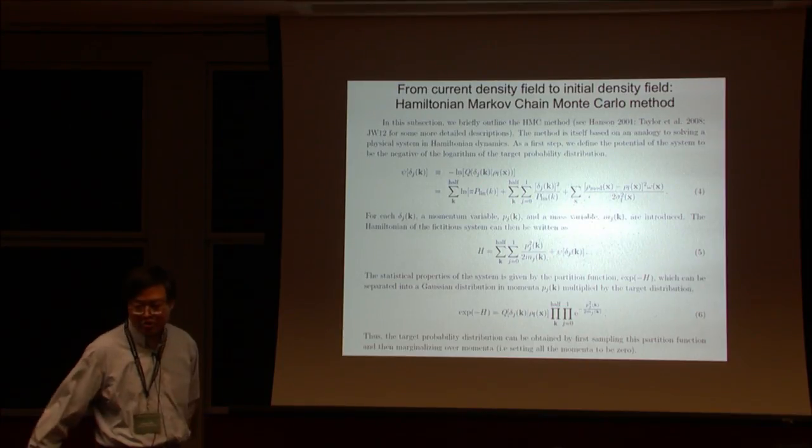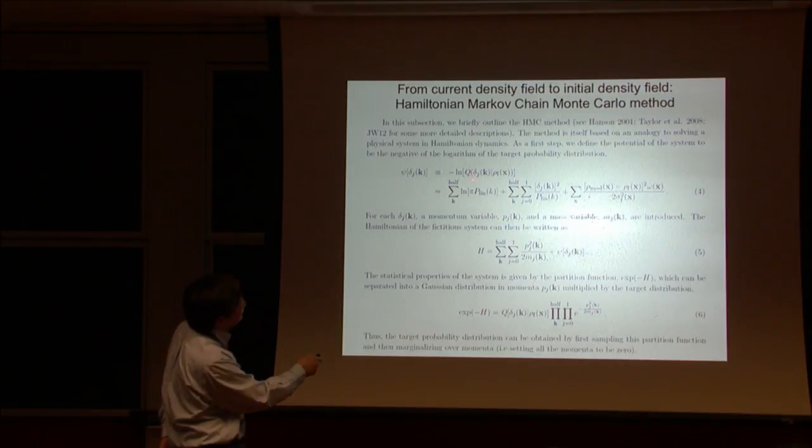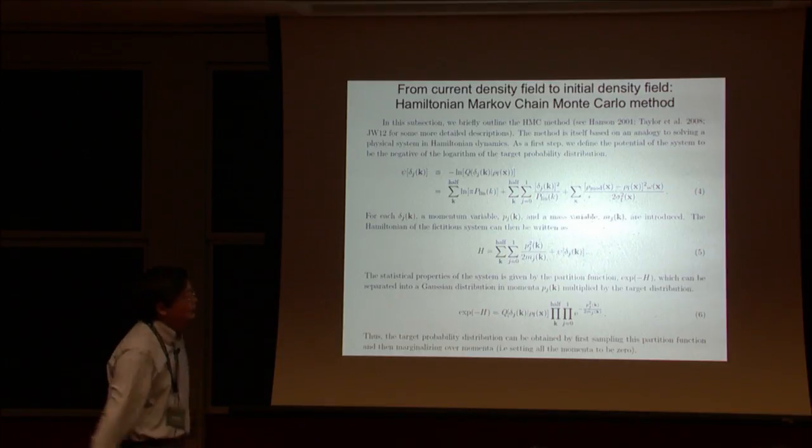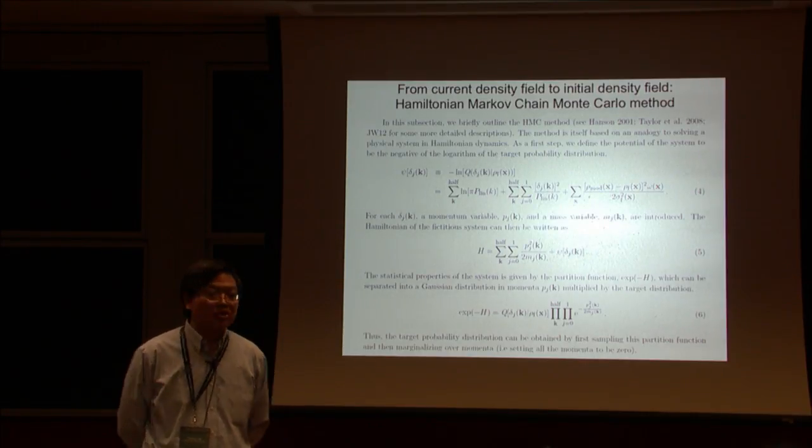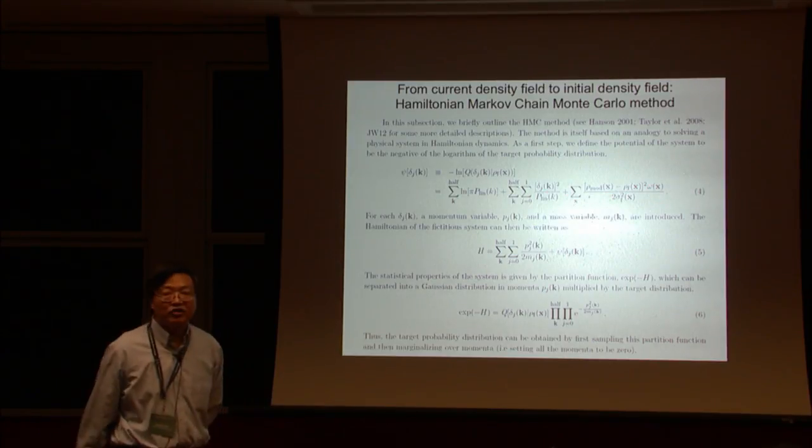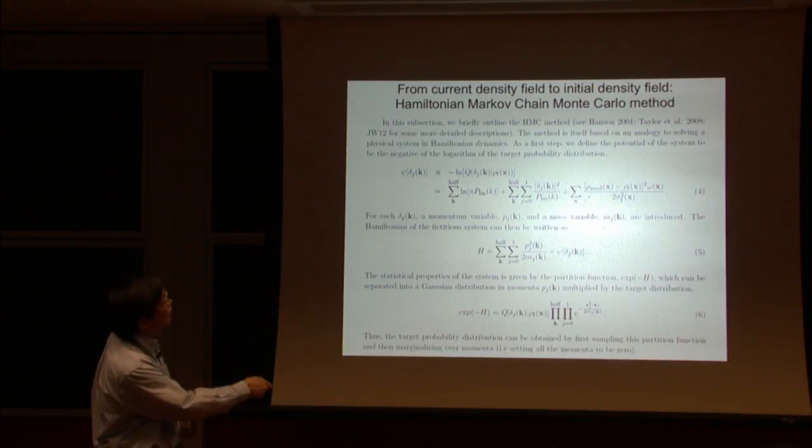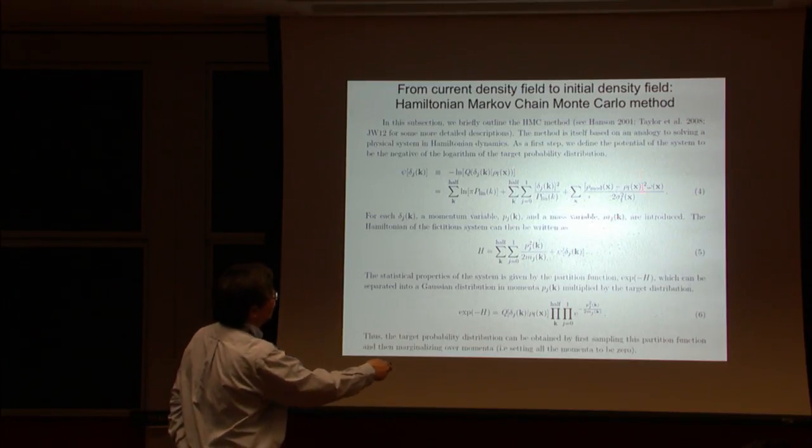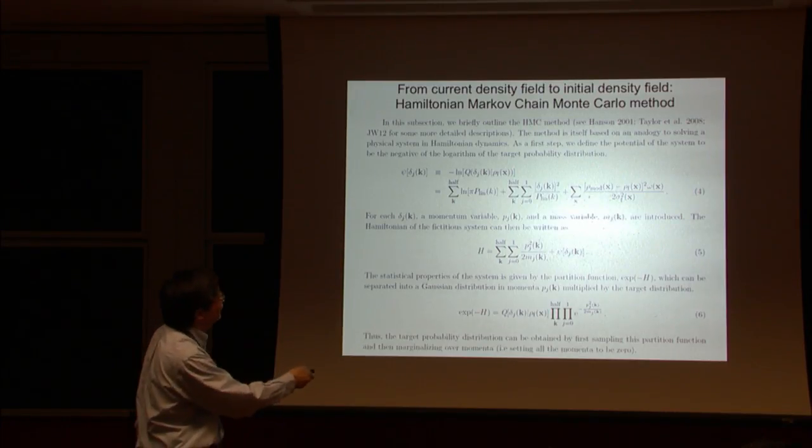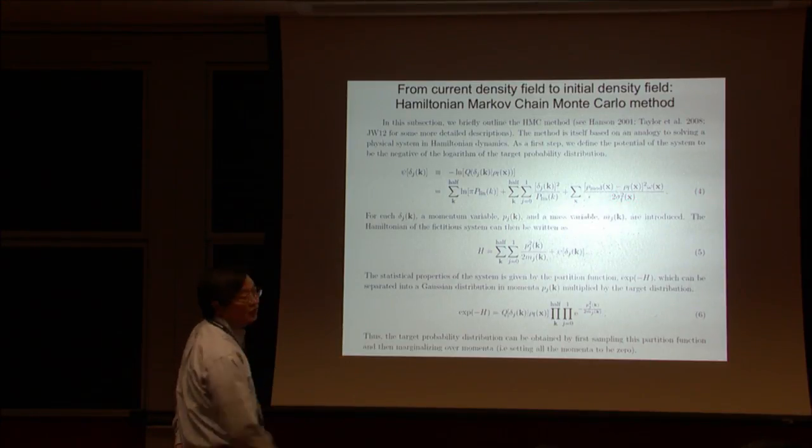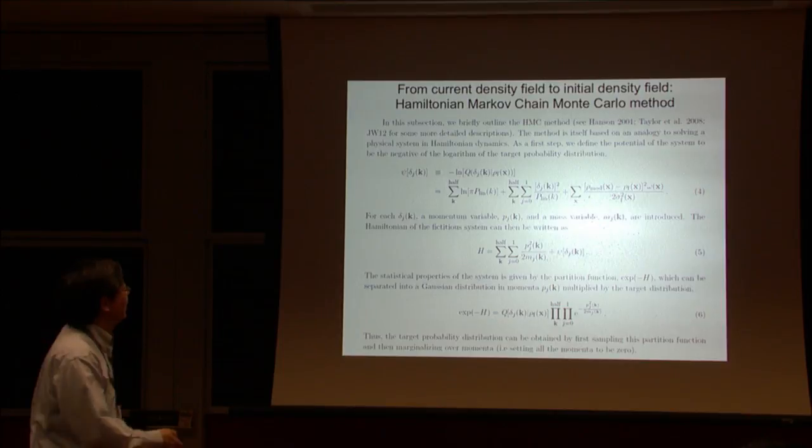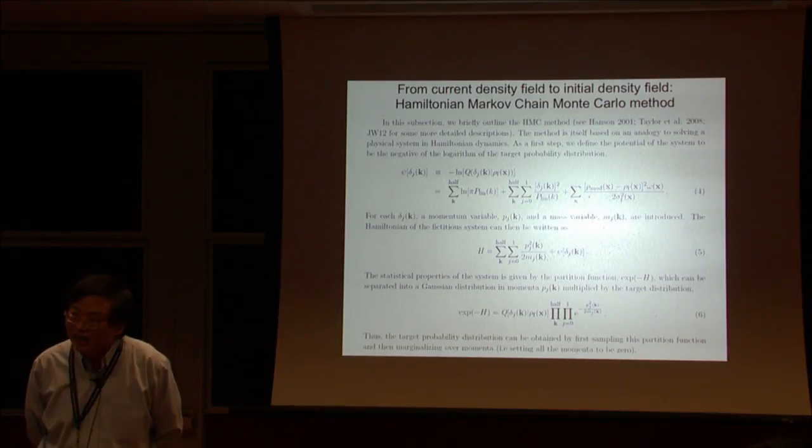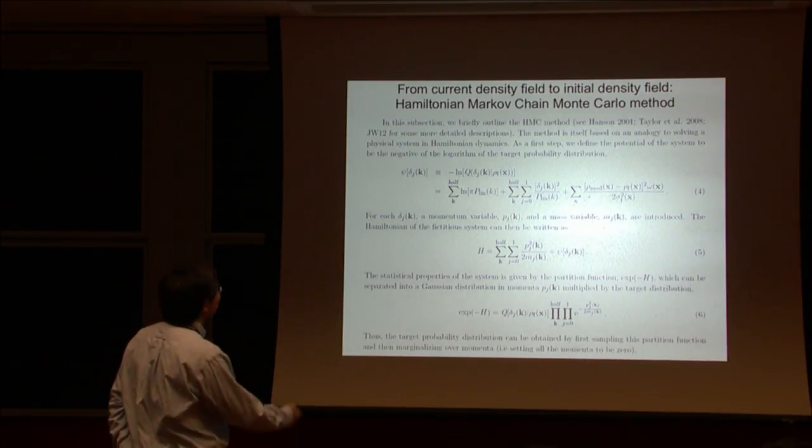The basic idea is that you write down some kind of probability distribution function for the initial condition here in Fourier space, given the final density field. This probability consists of two parts. One is the likelihood function, so you want to match your model final density field with the final density field that you put in. You can write a chi-square kind of sense. This function here gives you some smoothing. This part is the prior. We consider a lambda CDM model, Gaussian fields, and given power spectrum.